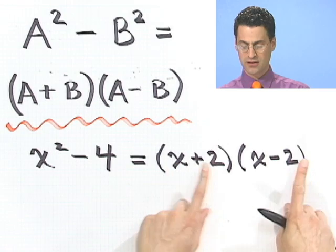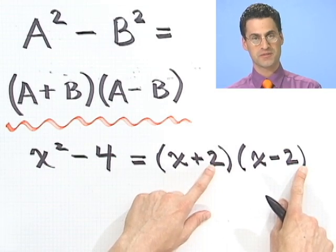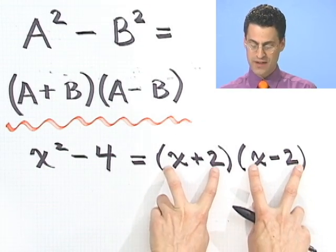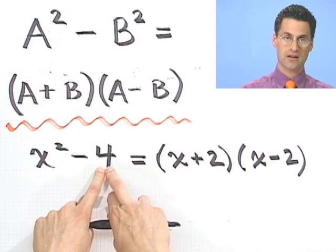You don't believe me? Check. x squared, 2x minus 2x cancel, minus 4. Now, a great mistake, by the way, would be to put a plus 4 and a minus 4 here, getting a little bit overambitious. But remember, you have to put in the actual values whose products will be these values.